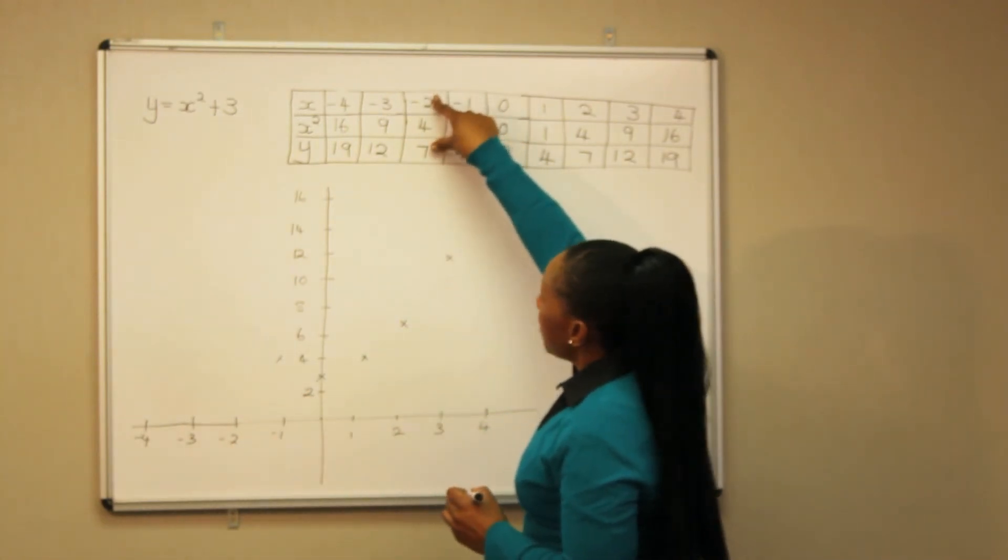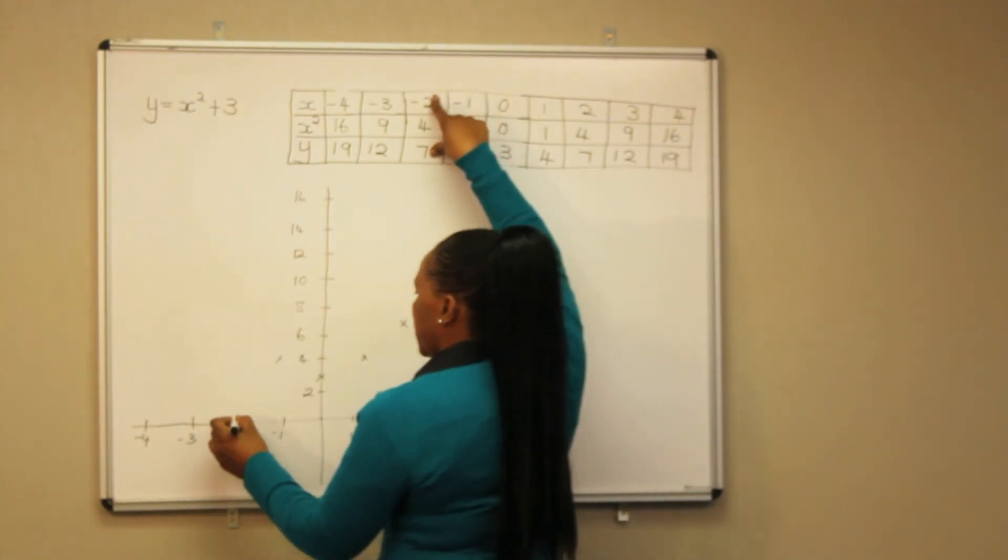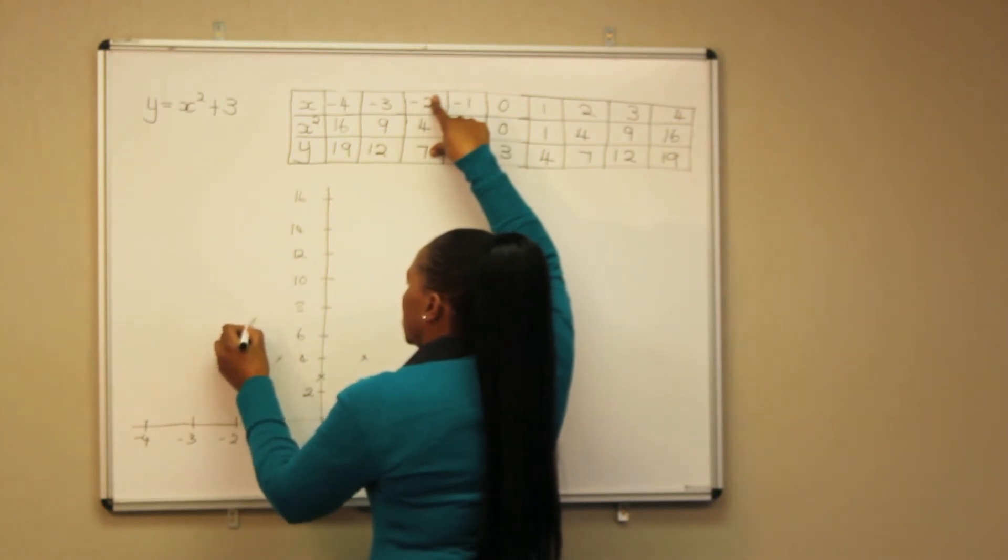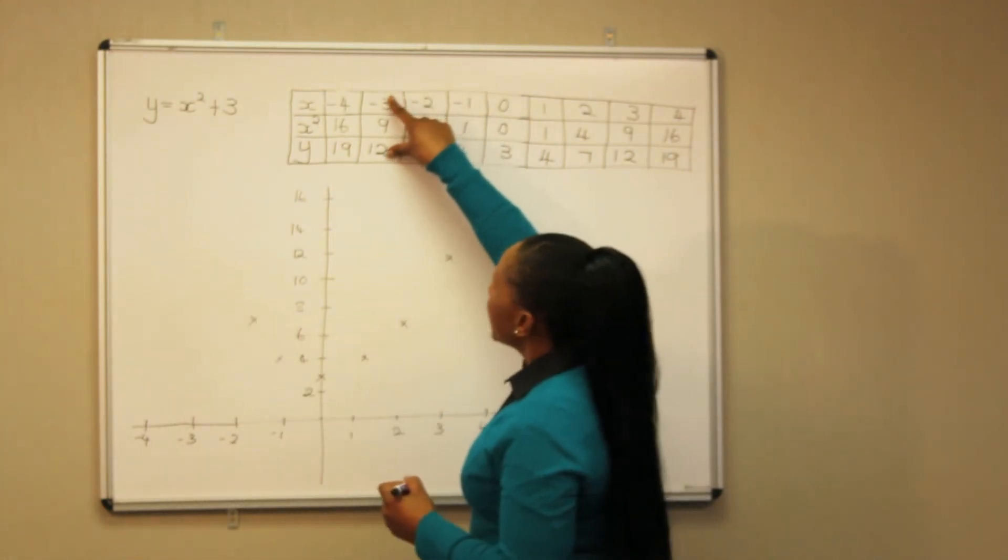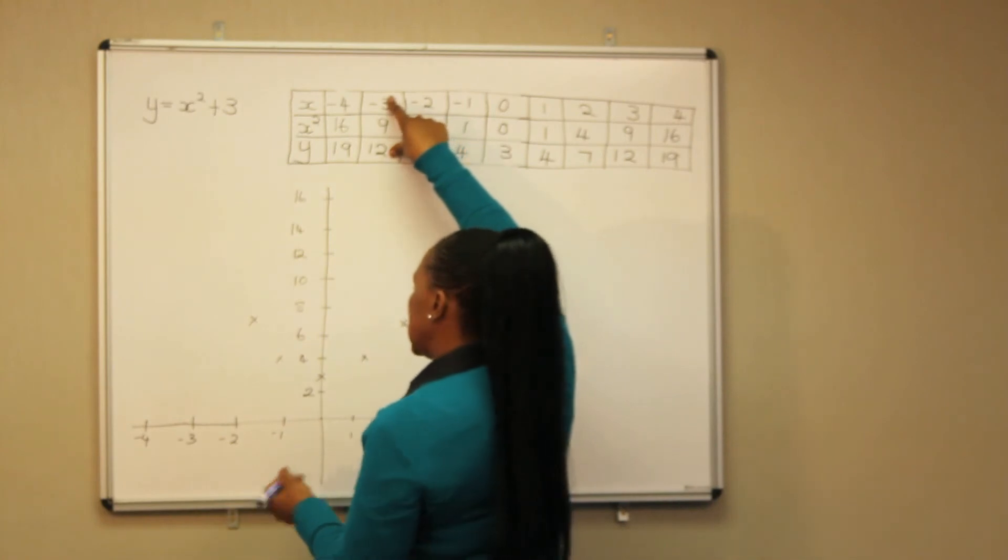When x is minus 2, y is 7. When x is minus 3, y is 12.